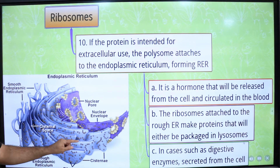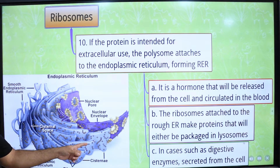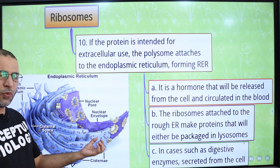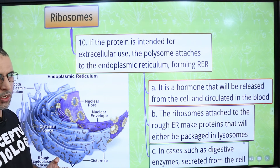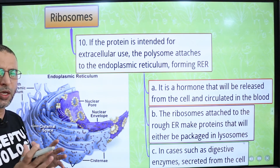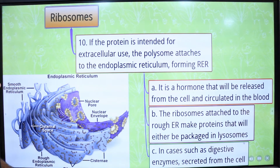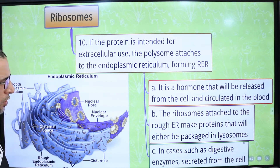When protein synthesized by ribosomes is to be exported from the cell, the polysome is attached to the endoplasmic reticulum. Endocrine glands secrete hormones, which are proteinaceous in composition, so the cells of endocrine glands have ribosomes attached to the endoplasmic reticulum involved in synthesizing protein that functions as hormones. In the case of digestive glands, which secrete enzymes — and all enzymes are proteins — polysomes attached to the endoplasmic reticulum are involved in synthesizing proteins that function as digestive enzymes.